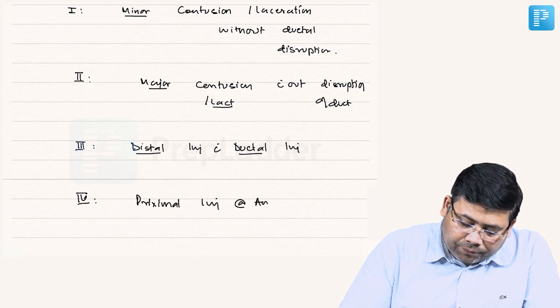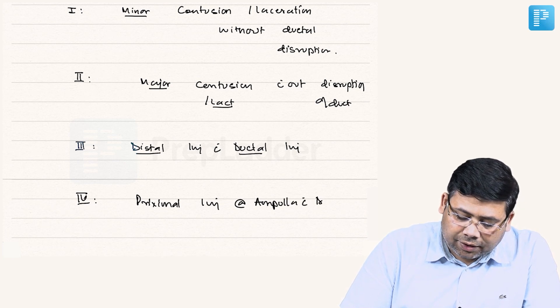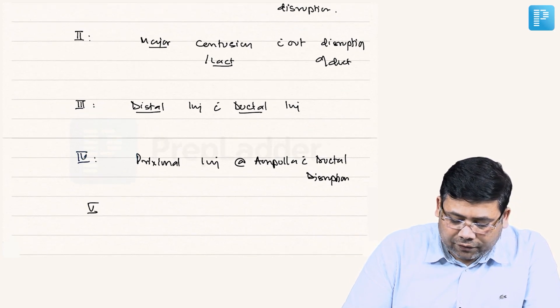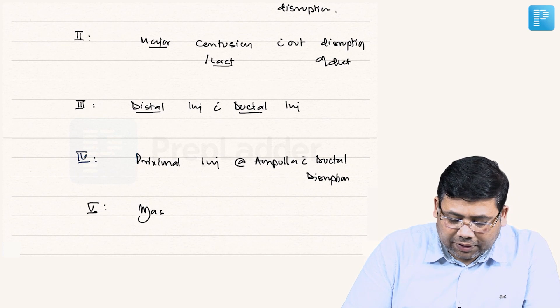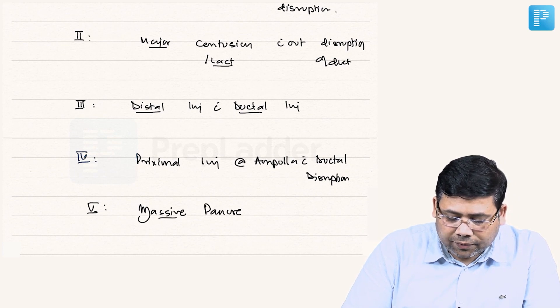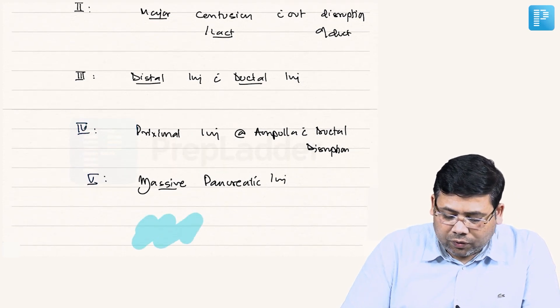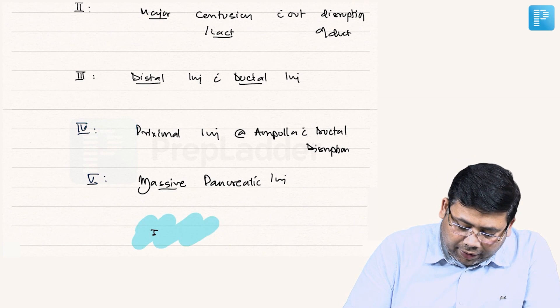Grade four is proximal injury involving the ampulla with ductal disruption. And if we talk about grade five, that is massive pancreatic injury.